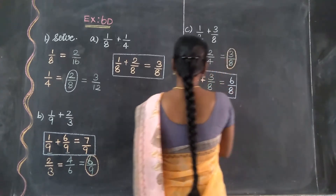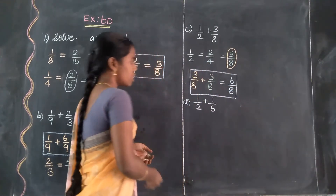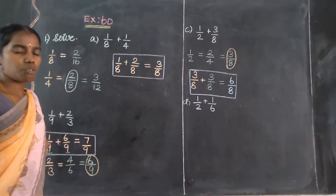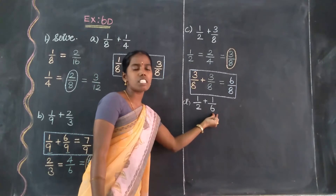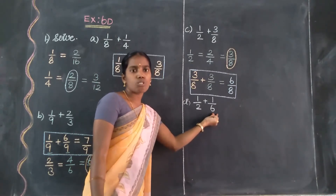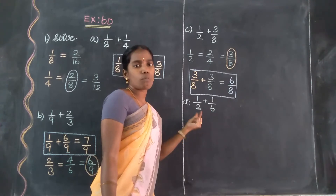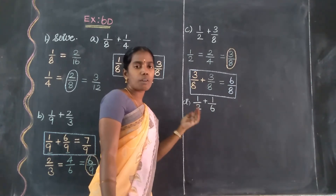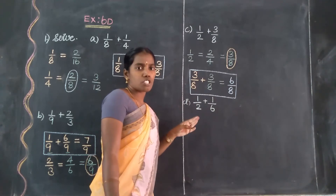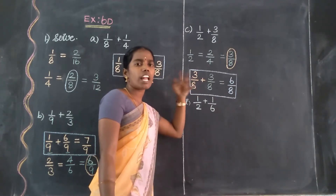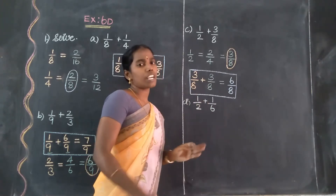Next is problem D. The first fraction is 1 by 2 and the second fraction is 1 by 6. The second fraction's denominator value is 6. So we are changing the first fraction's denominator to match, and the numerator will automatically change too. Consider only the denominator value.